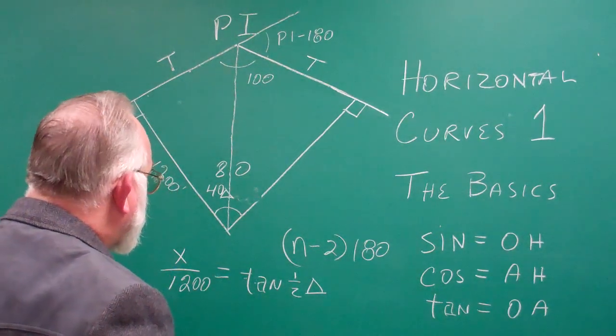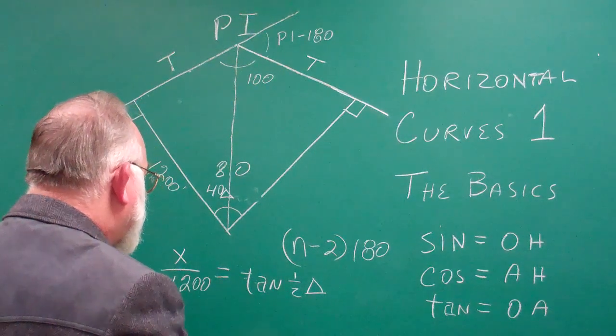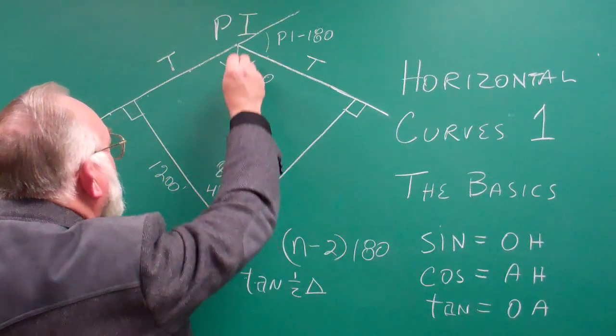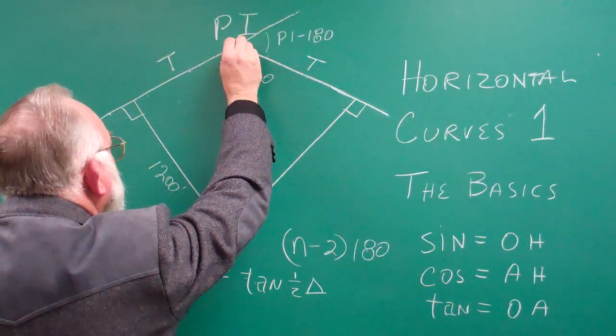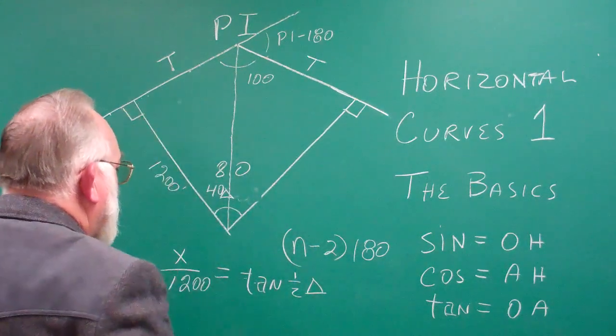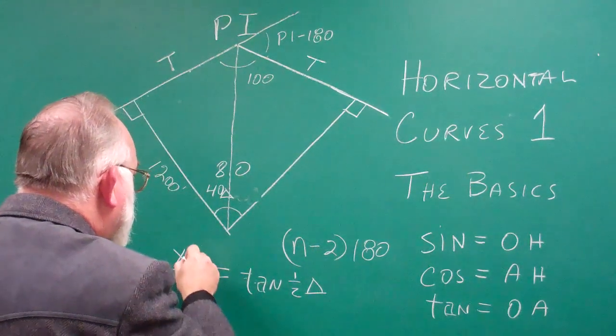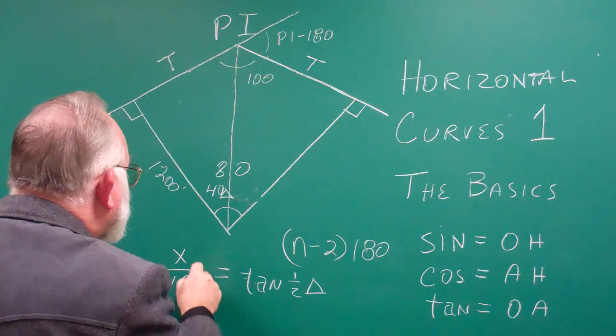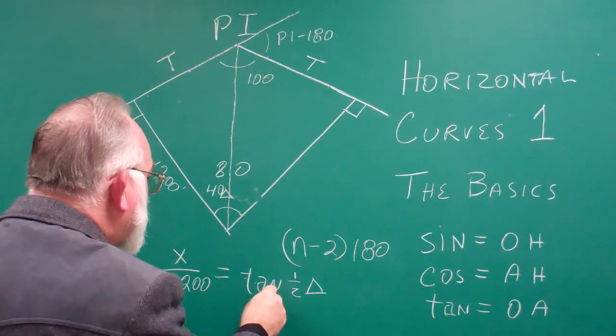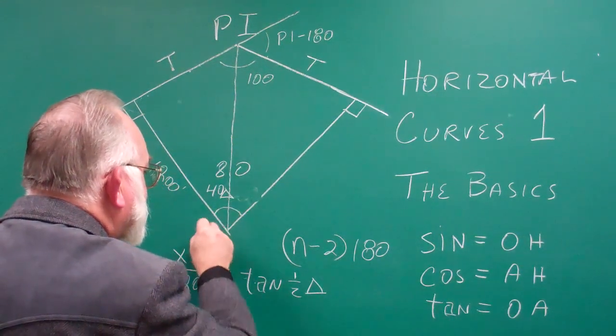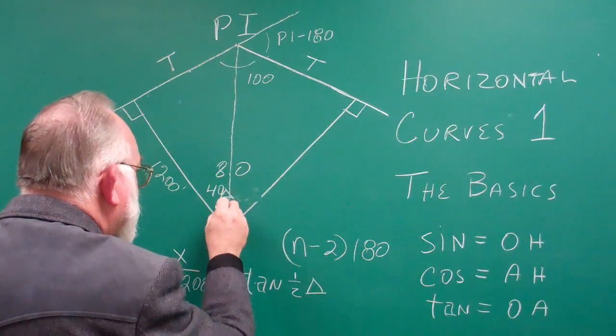But all you have to do to figure out this distance from the PI to here is to figure that distance divided by 1,200 equals the tangent of half of the delta angle.